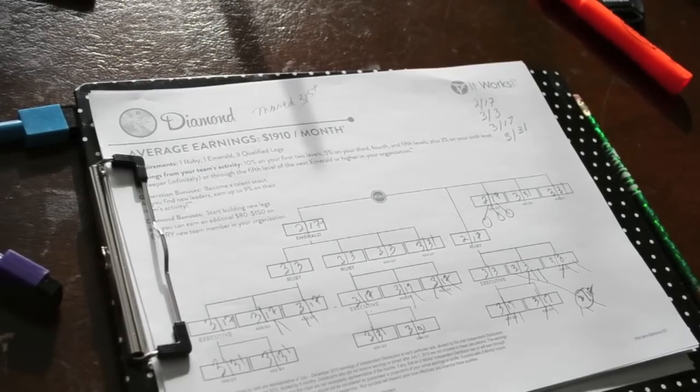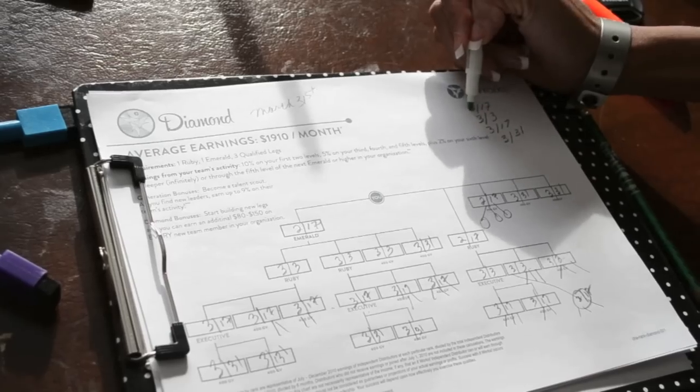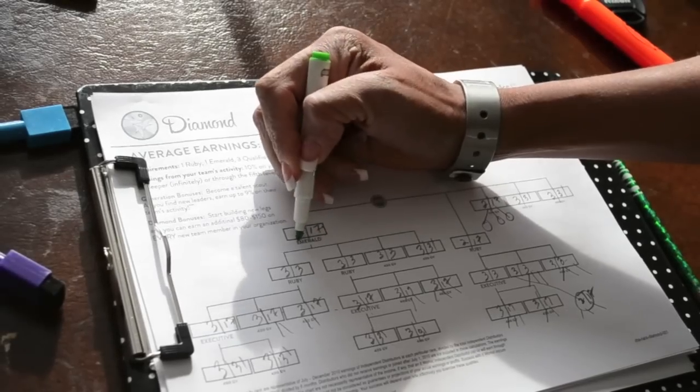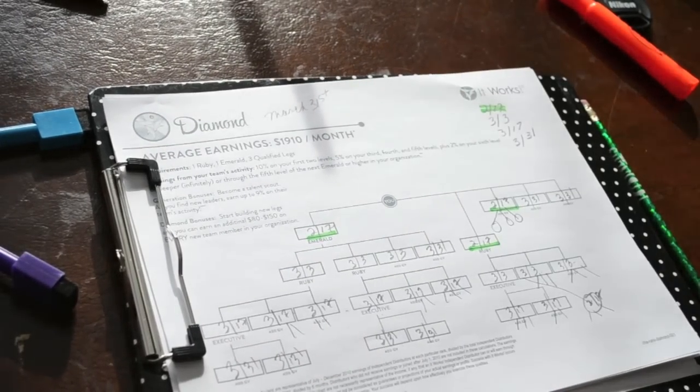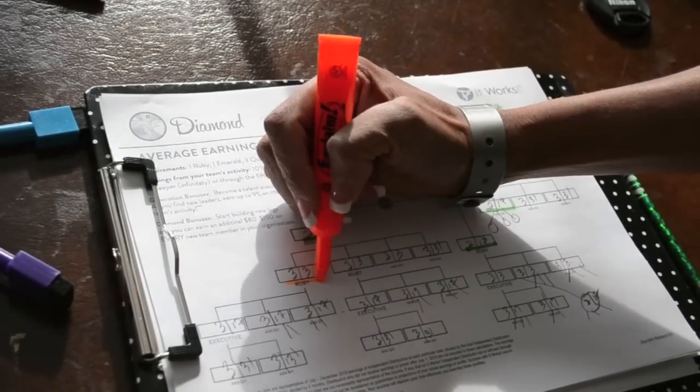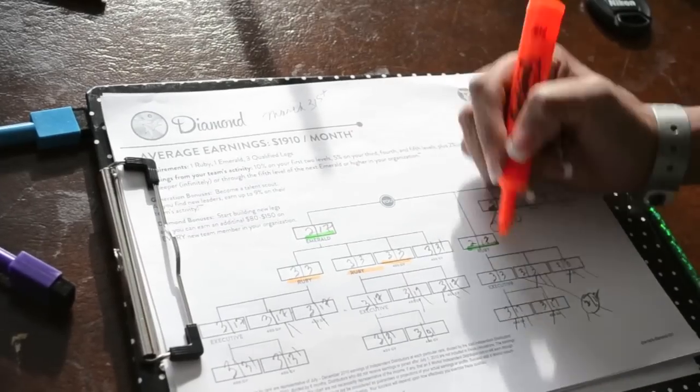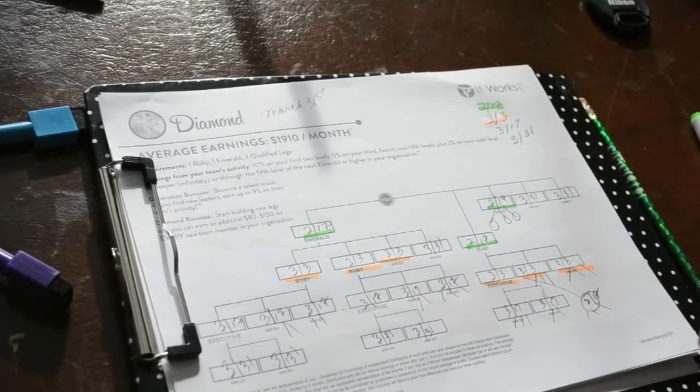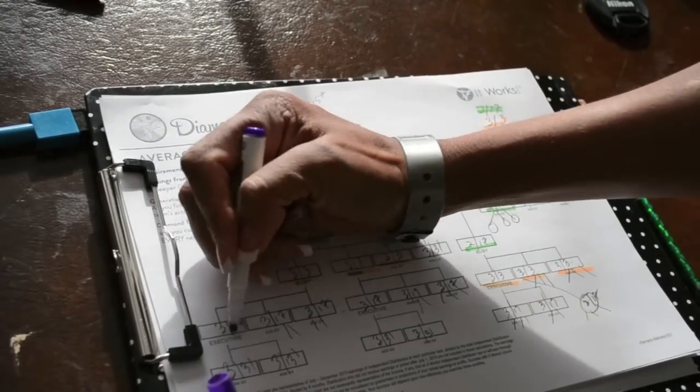So let's take a look if I need to color code this a little bit better for you. It might help. So again, by February 17th, you want to personally sponsor at least three people. And then we're going to have those people go out and sponsor their three people by March 3rd.